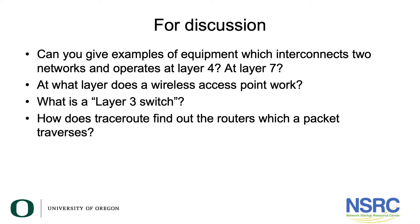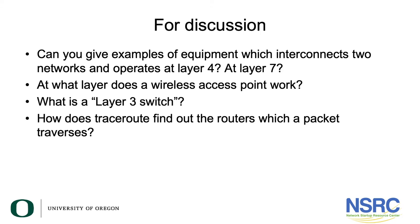What about equipment that works at layer 4? A layer 4 device will inspect the layer 4 header — the UDP or TCP header — which means it looks at port numbers. A firewall is an example: it has rules that say allow traffic from this address to this address on this port, but block it on a different port. A NAT device that does network address translation also works at layer 4 because it has to manipulate both the IP address and the port number in each packet.